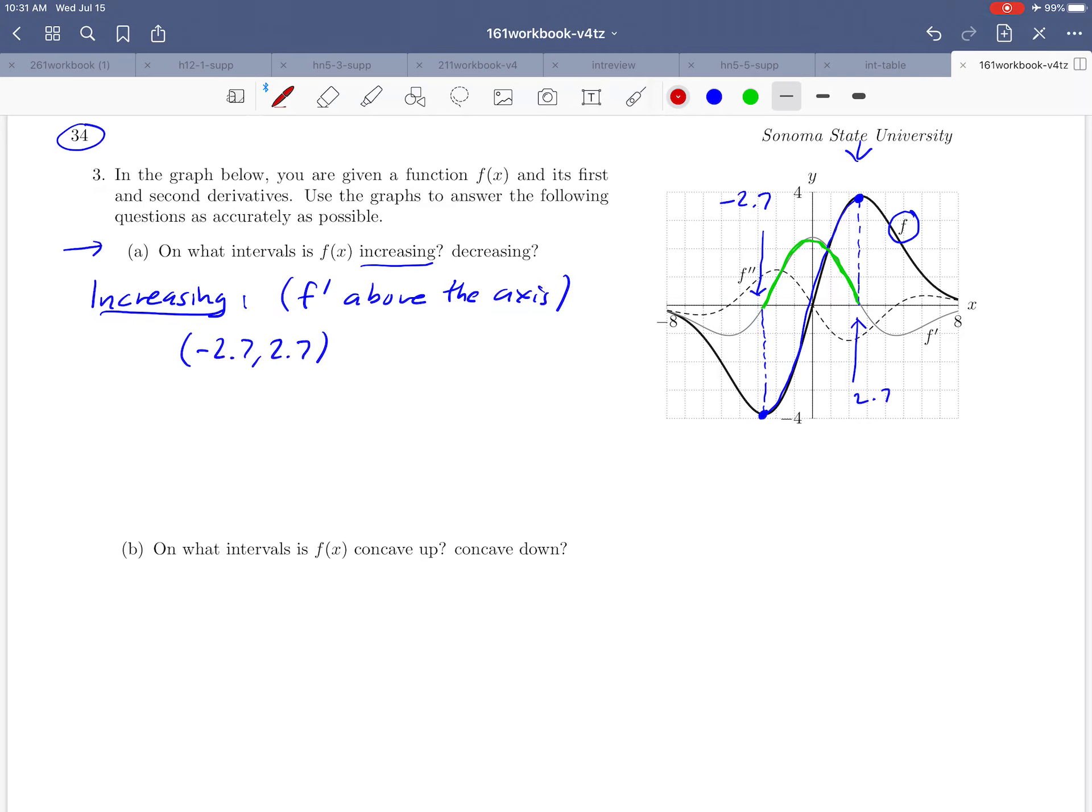Remind you just of what this notation means. That looks like a point but it really represents the interval of x values between negative 2.7 and 2.7. Just another way of writing it.